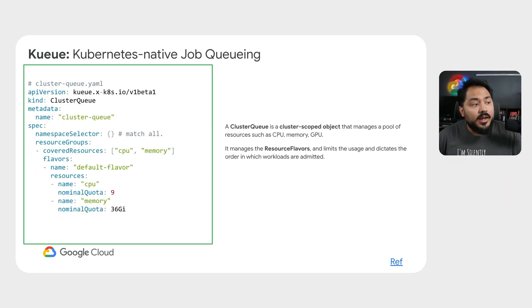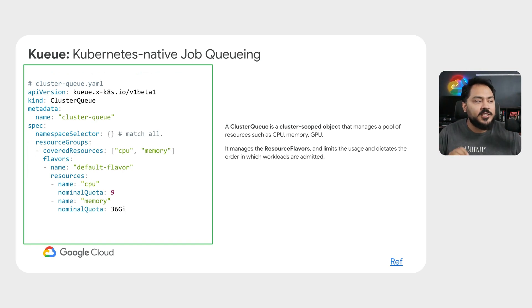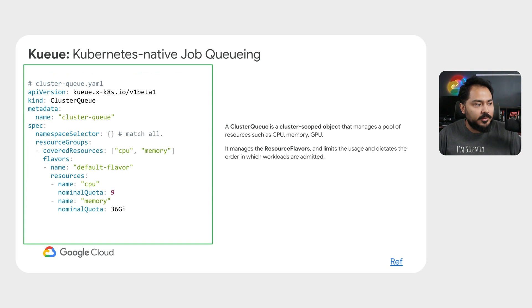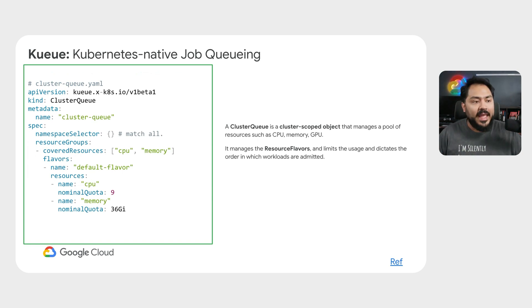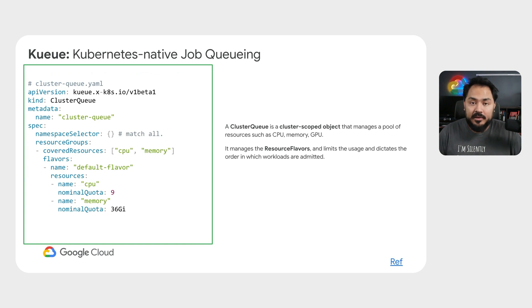A cluster queue is a cluster-scoped object that manages a pool of resources such as CPU, memory, and GPU. It manages the resource flavors and limits the usage and dictates the order in which workloads are admitted.